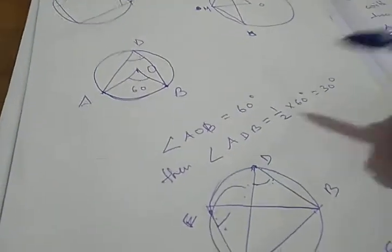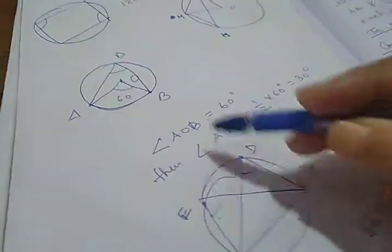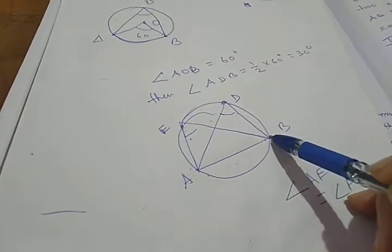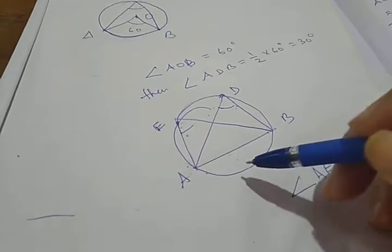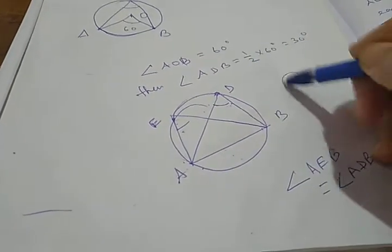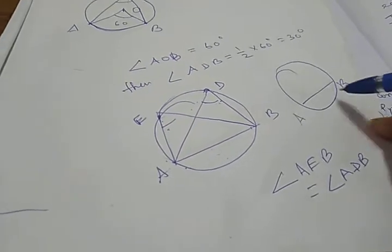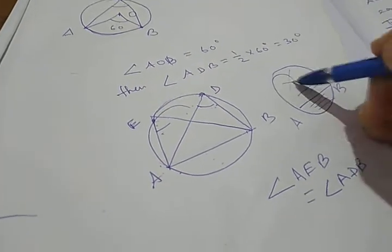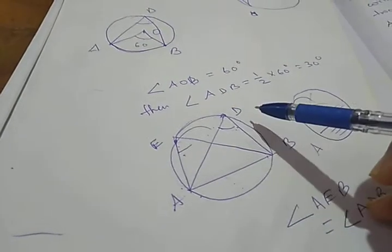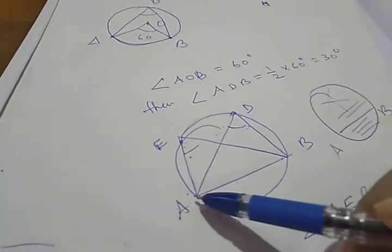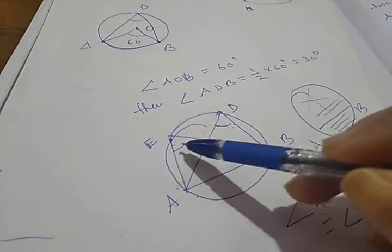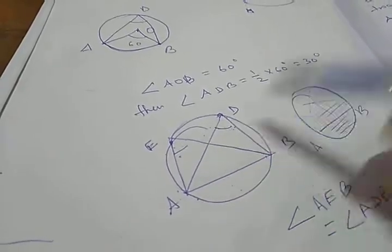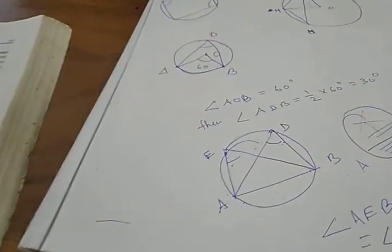Another theorem we are going to use is theorem number 10.9: angles in the same segment of the circle are equal. Now, AB chord divides the circle into two parts — one is the minor segment and the other is the major segment. If I take two points E and D on the major segment, then the AB chord makes angle ADB and angle AEB in the same segment. These two angles must be equal, because they are angles in the same segment subtended by the same arc or chord.